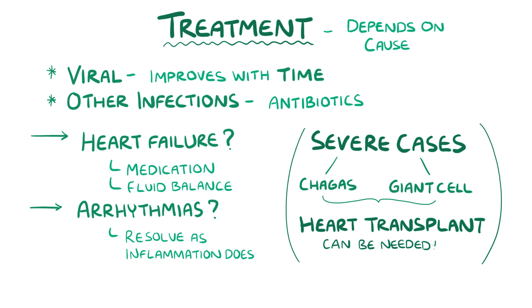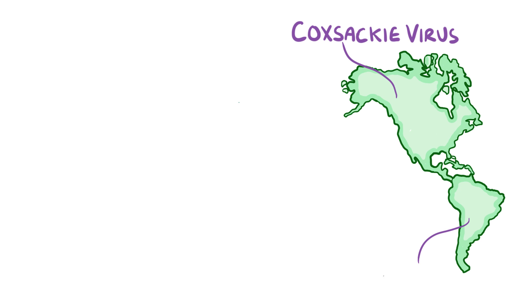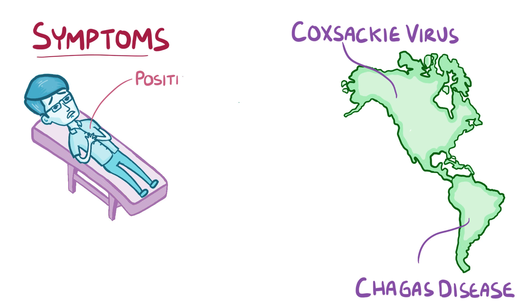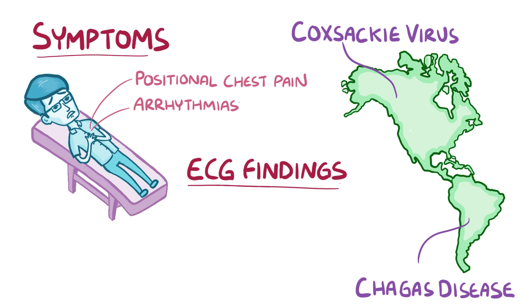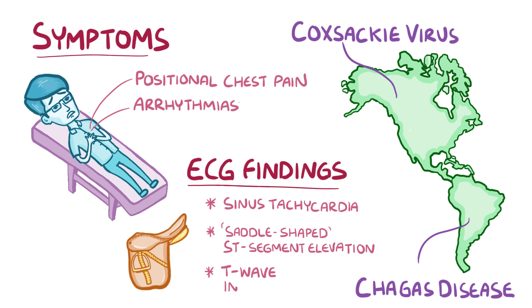In severe cases, such as some cases of Chagas myocarditis and giant cell myocarditis, a heart transplant may be needed if other treatments don't work. As a quick recap: in North America, myocarditis is most often caused by viruses like Coxsackie, but in South America a common cause is Chagas disease. Symptoms include positional chest pain and arrhythmias, and classic ECG findings include sinus tachycardia with saddle-shaped ST segment elevations and T wave inversions.